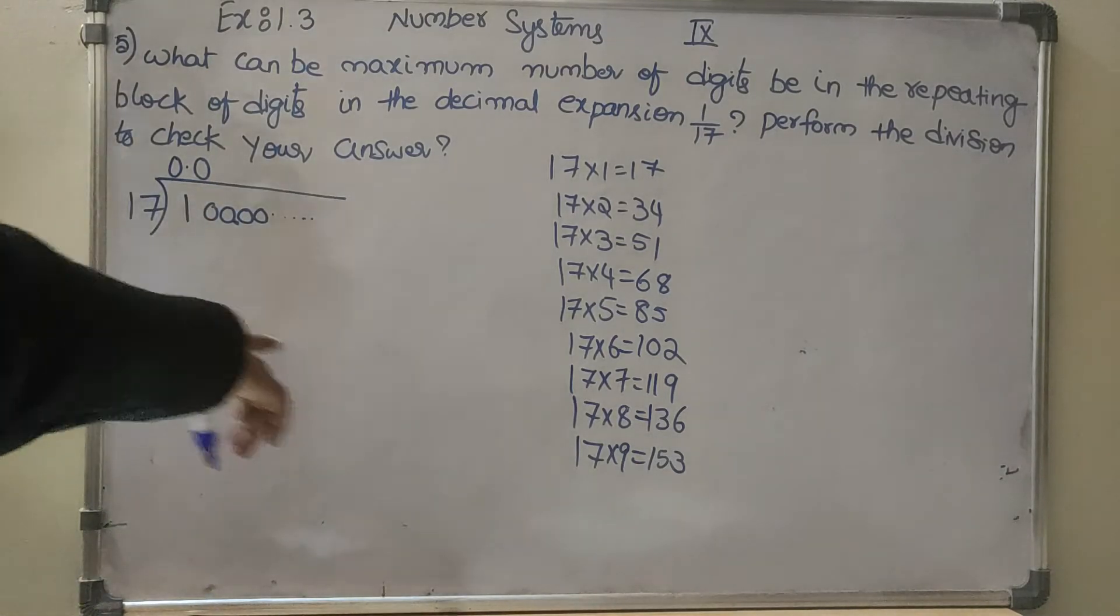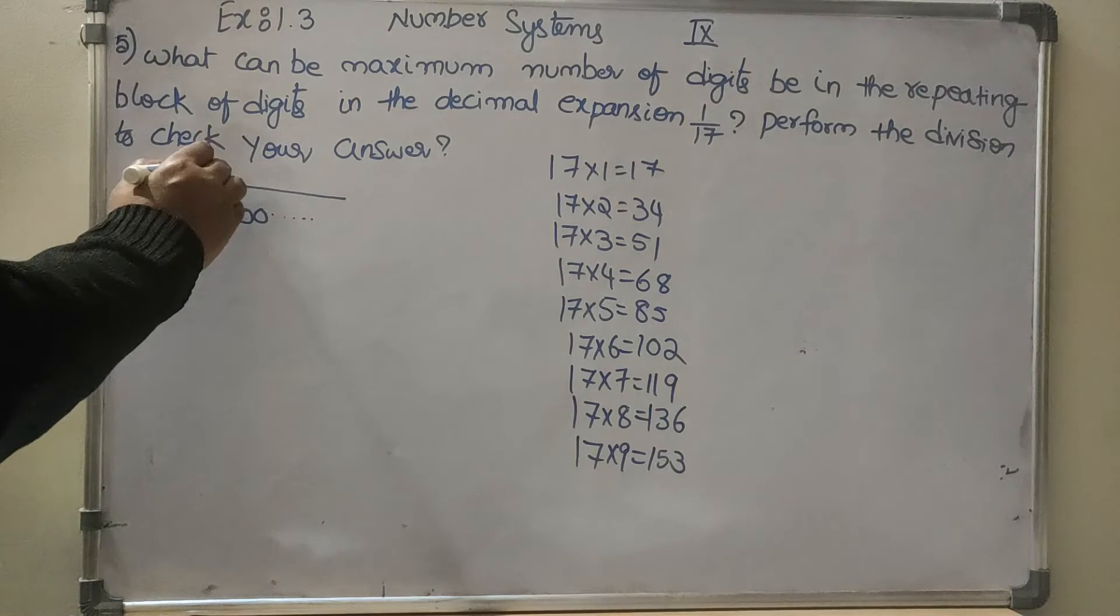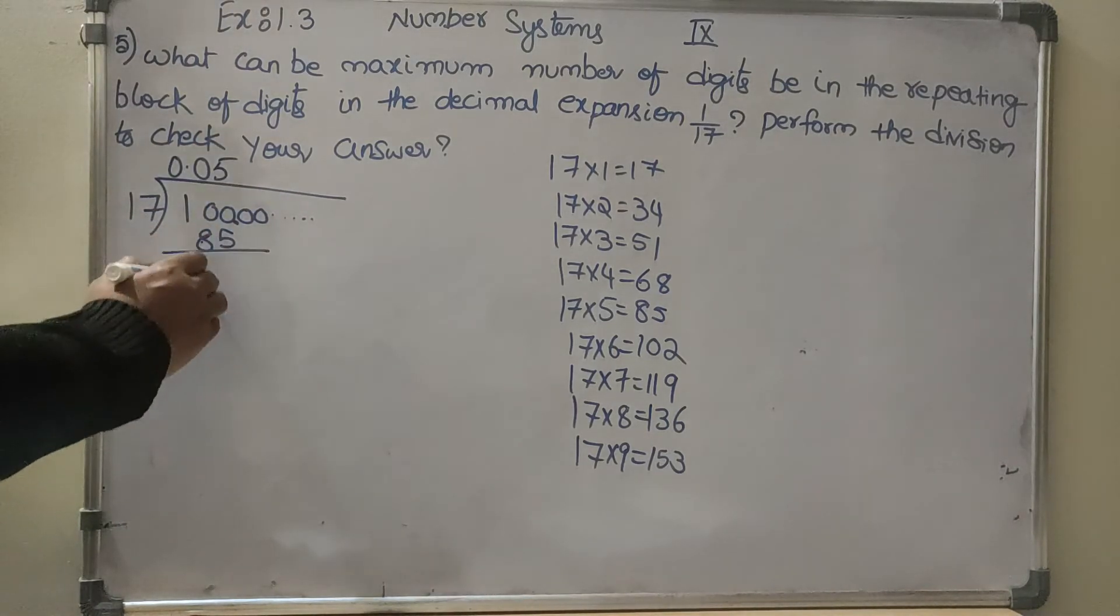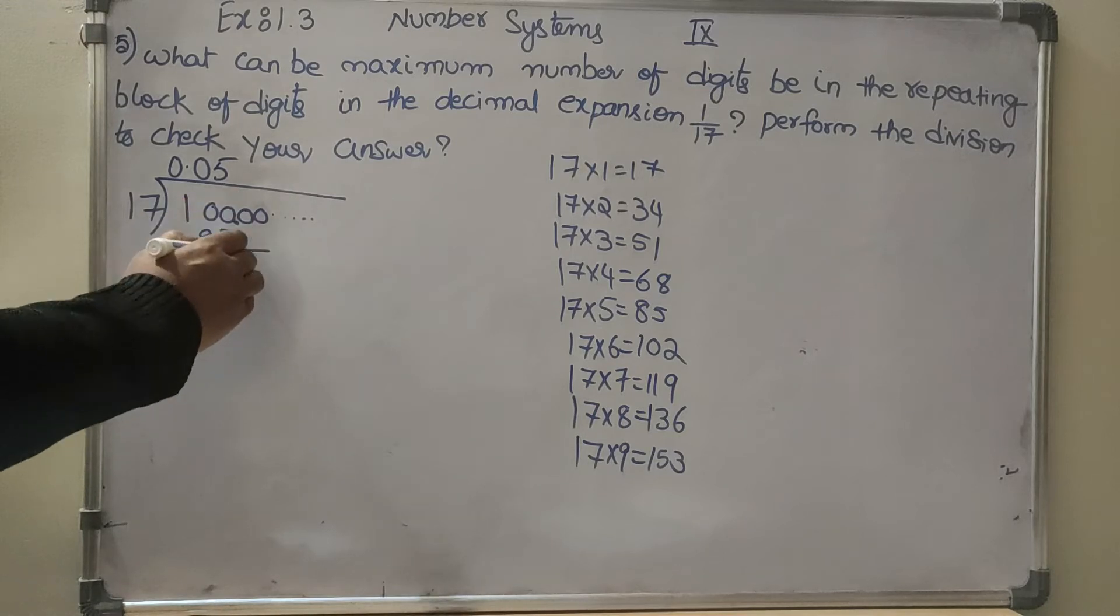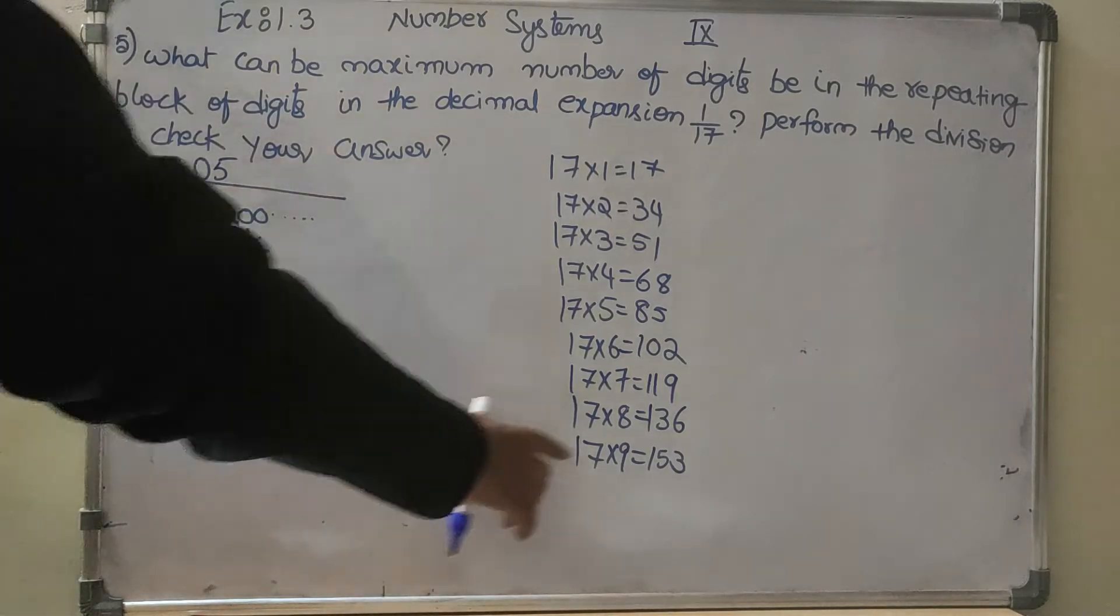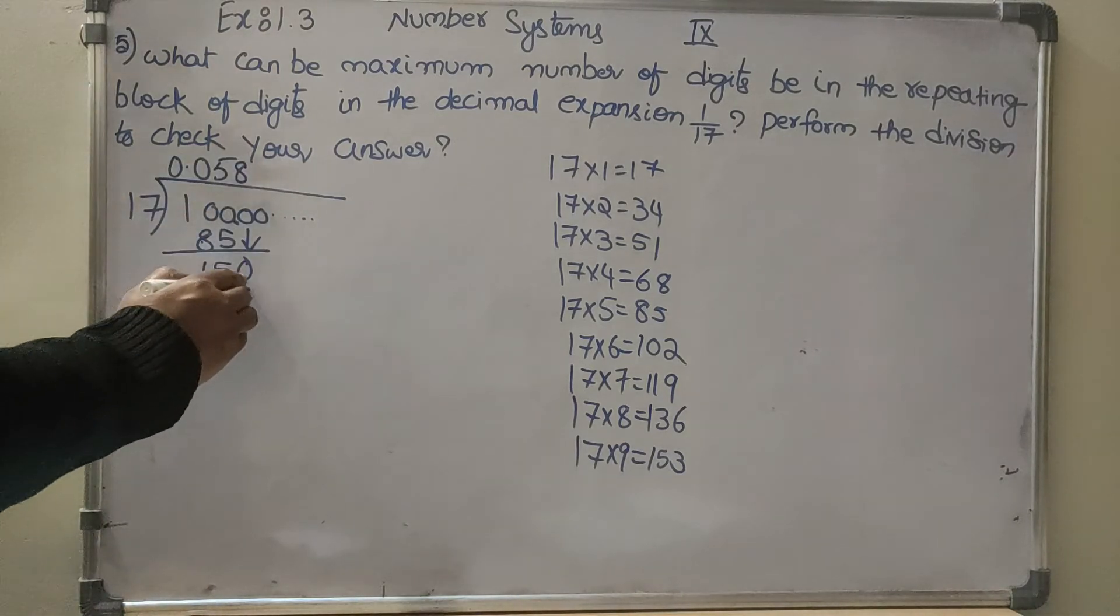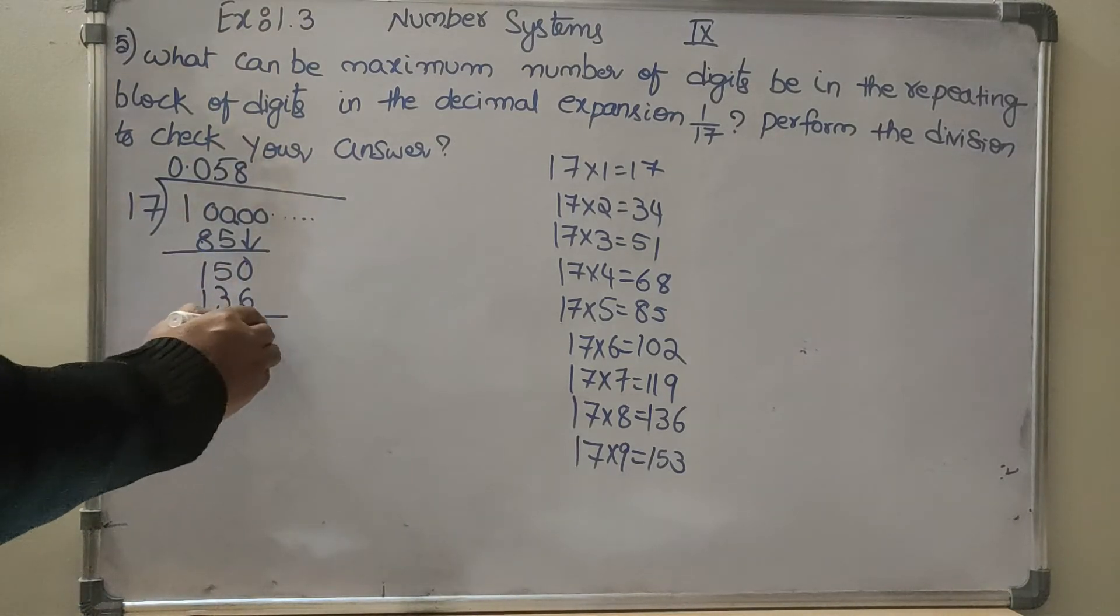Out of 100, 5 times it goes. 5 seventeens are 85, 15 is the remainder, 0 comes down. So 150, 8 times which is 136, 14 is the remainder.